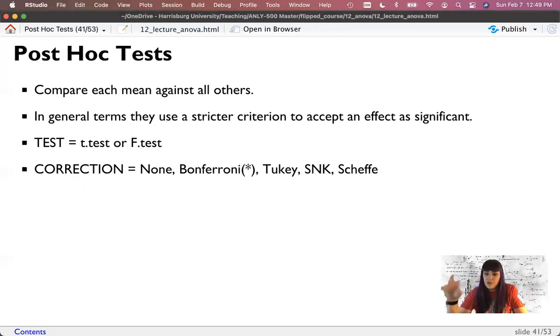So we could do no correction, which would be bad. We could do Bonferroni, which is very popular. We're going to use that one. Tukey is also very popular. Student Newman-Keuls or the Scheffe test. Scheffe is the lone man out. It's actually an F-test.